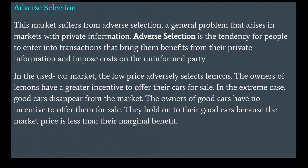This market suffers from adverse selection, a general problem that arises in markets with private information. Adverse selection is the tendency for people to enter into transactions that bring them benefits from their private information and impose costs on the uninformed party. In the used car market, the low price adversely selects lemons — owners of lemons have greater incentive to offer their cars for sale. In the extreme case, good cars disappear from the market because their owners hold on to them since the market price is less than their marginal benefit.